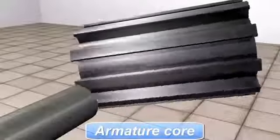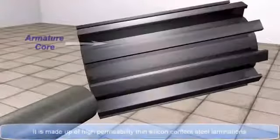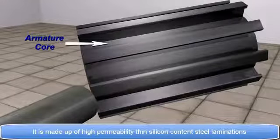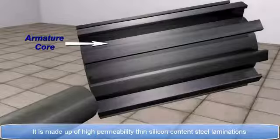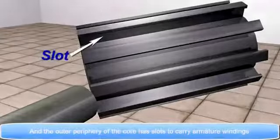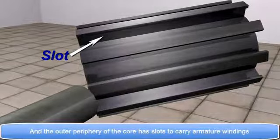To start with, we have Armature core. It is made up of high permeability thin silicon content steel laminations. And the outer periphery of the core has slots to carry armature windings.